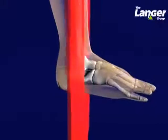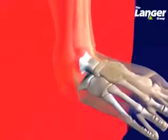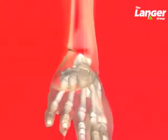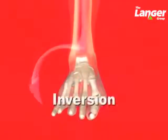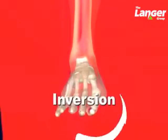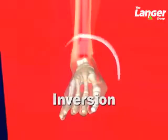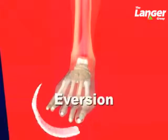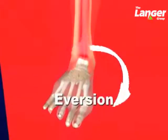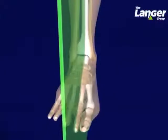The frontal or coronal plane divides the foot into anterior and posterior portions. Inversion and eversion are the motions that occur parallel to this plane. Inversion is when the plantar surface of the foot rotates toward the midline of the body, and eversion is when the plantar surface of the foot rotates away from the midline of the body.